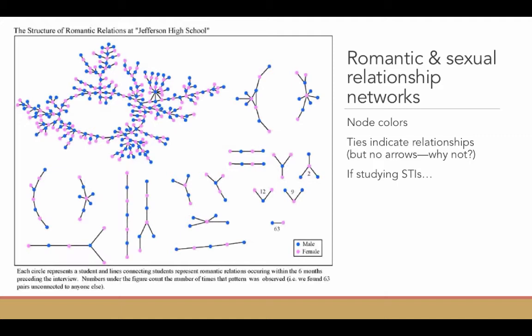575-ish students indicated to the researchers that they either had a romantic relationship with somebody or a sexual relationship with somebody. The nodes, which are different colors, blue and pink, indicate gender or sex. The nodes are connected by ties, which indicate that those two people have either a romantic or a sexual relationship. You'll notice that the ties do not have arrows.